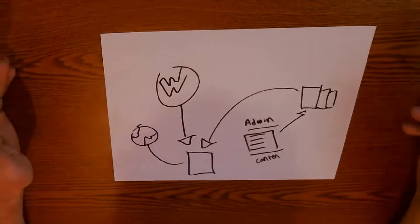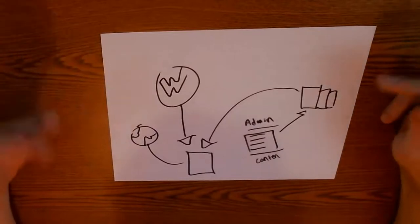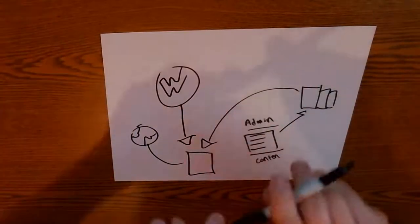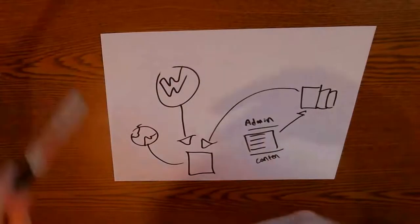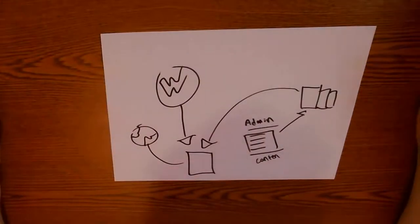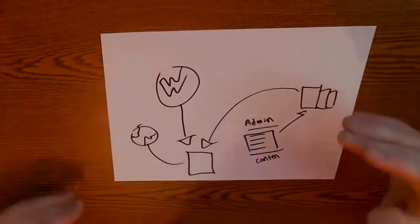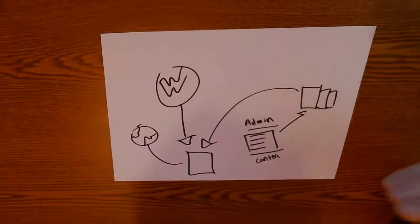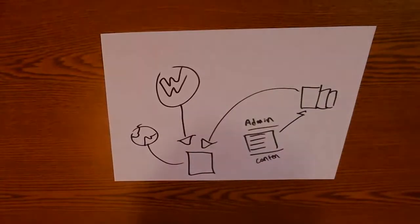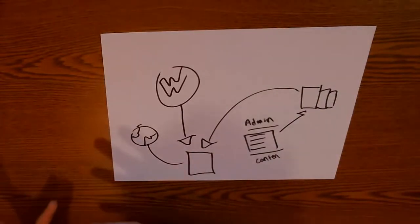Basically, with a normal website, your content is put into the template itself. And with WordPress, the template is kind of like a blank template, and then the content is put into a big pile and pulled into that template dynamically.